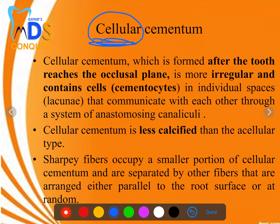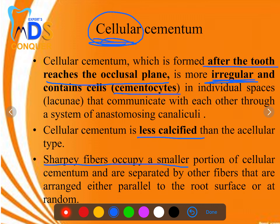Cellular cementum, as the name tells you, contains cells. It is formed after the tooth reaches the occlusal plane. It is not as organized as acellular cementum — it is irregular, less calcified, and contains cementocytes. It is composed more of intrinsic fibers, though Sharpey's fibers are present but occupy a smaller portion.